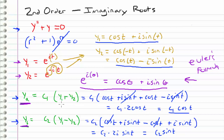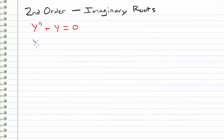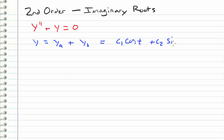By choosing these linear combinations, we also ensured linear independence, which is very important because we need two solutions to define the solution to this differential equation since we have two roots. Our final solution is the linear combination YA plus YB, which gives c1 cosine t plus c2 sine t.